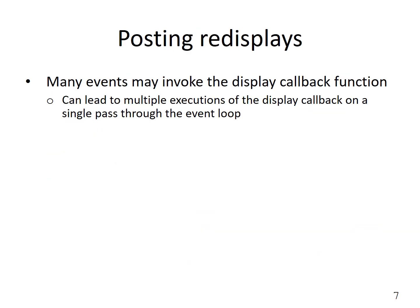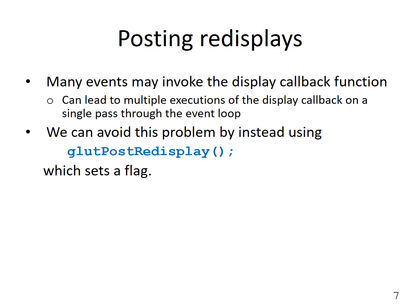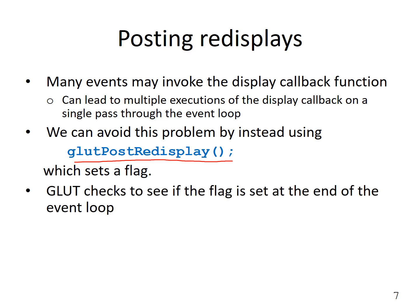There is another method called posting re-displays. Many events may invoke the display callback function — for example, multiple events inside the event queue may call for refreshing the display, but we don't want it refreshed every time; we just want it refreshed once. We can avoid multiple instances by using GlutPostRedisplay. Every time we do something inside the program that warrants a display refresh, we call GlutPostRedisplay, which simply sets a flag. GLUT checks to see if this flag is set at the end of the event loop, and if it is, it refreshes the display once only.